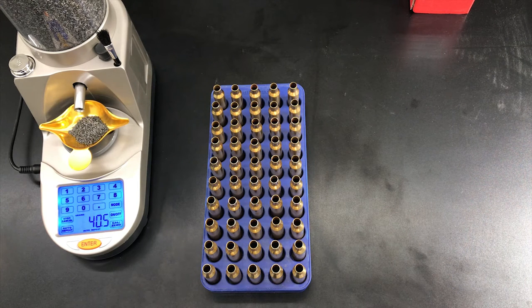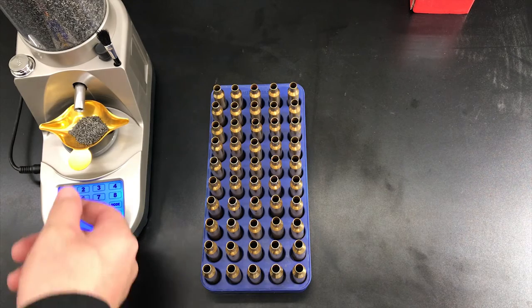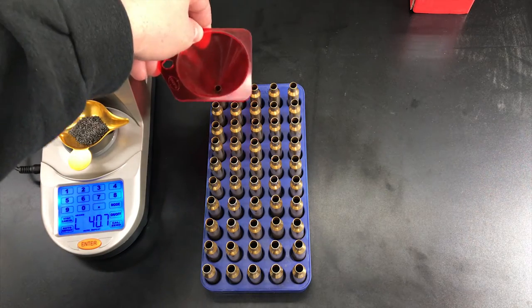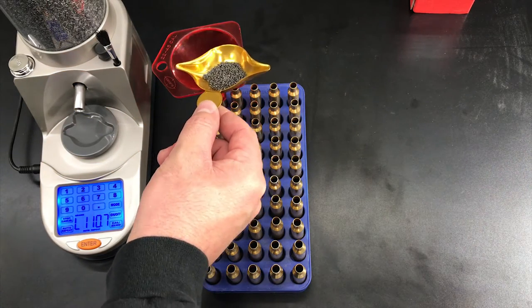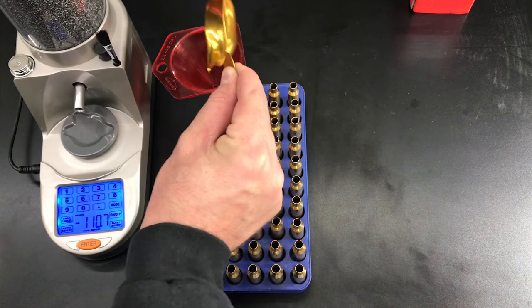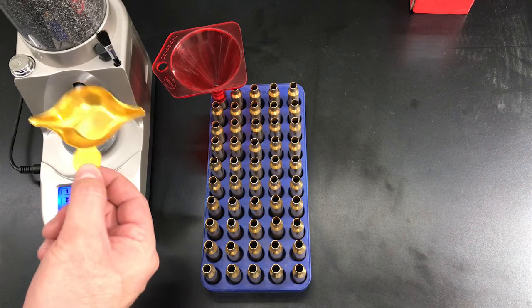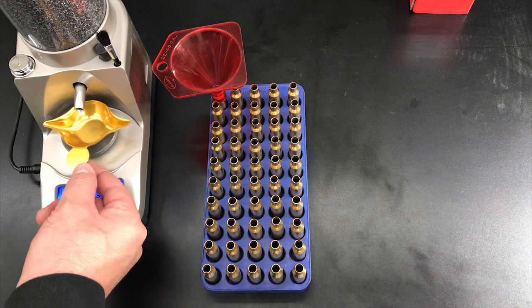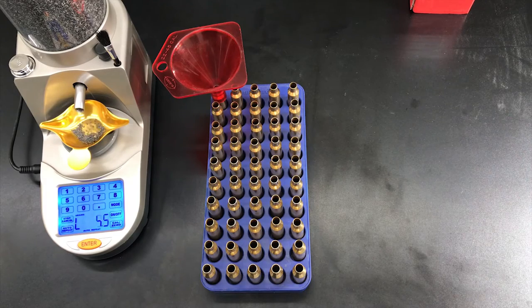I think the tolerance is within 0.2, so we're at 40.6, that's okay for our tolerance. We're going to use our Lee powder funnel and we're gonna charge our cartridge. Then we're gonna replace the pan back on the scale and it will automatically pour the next charge.